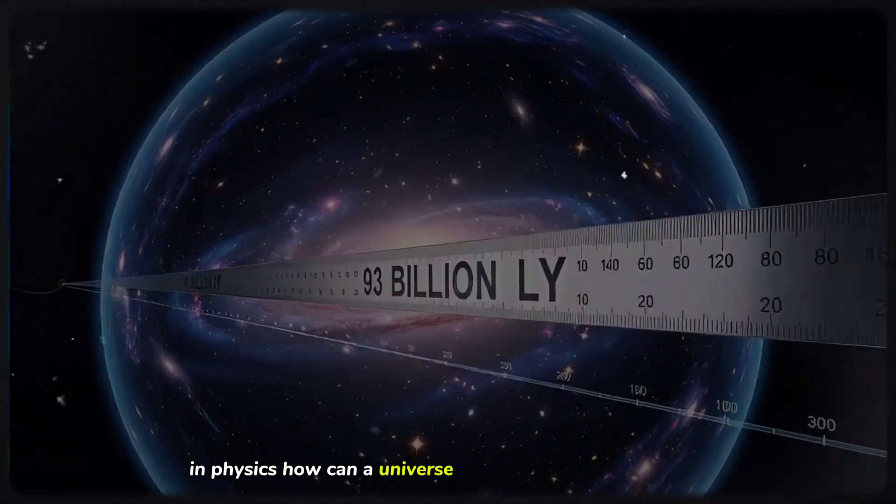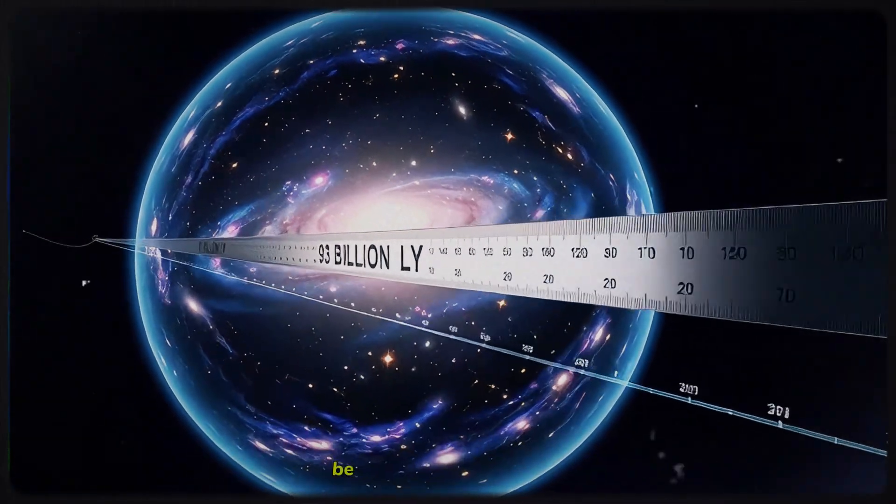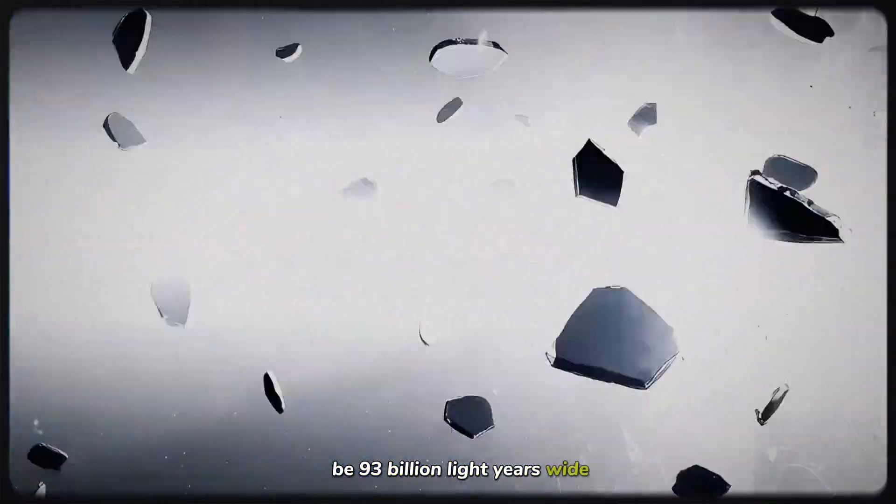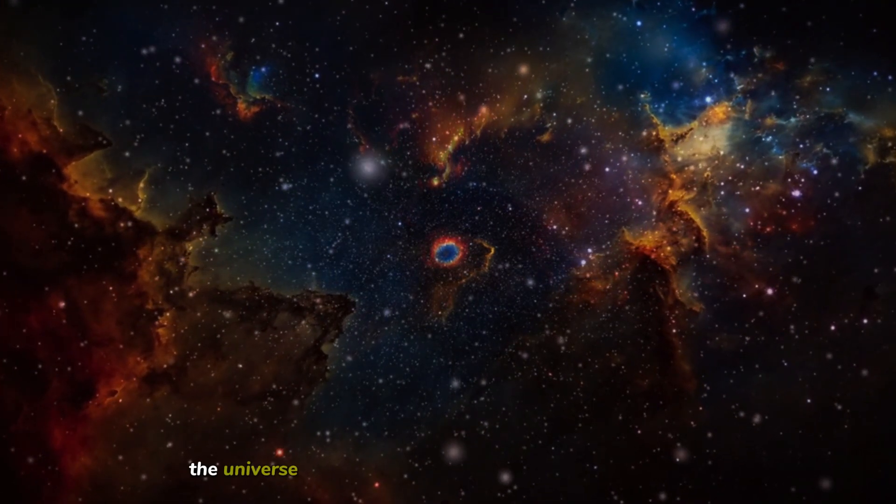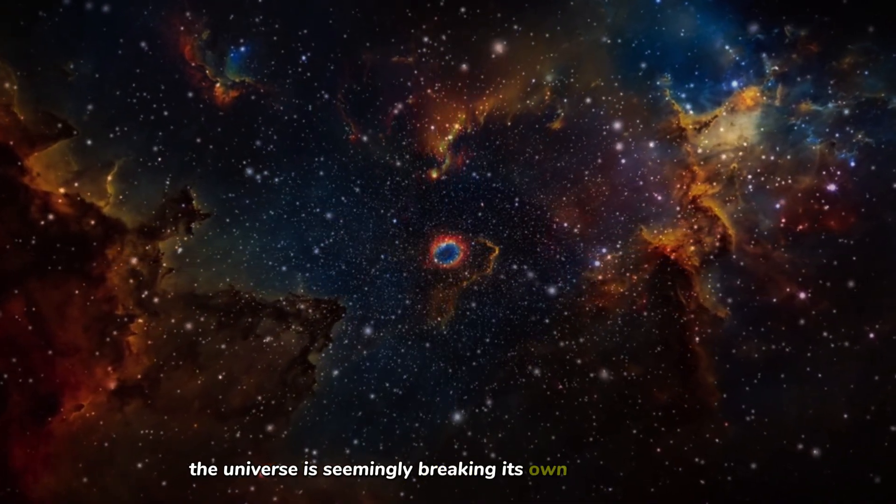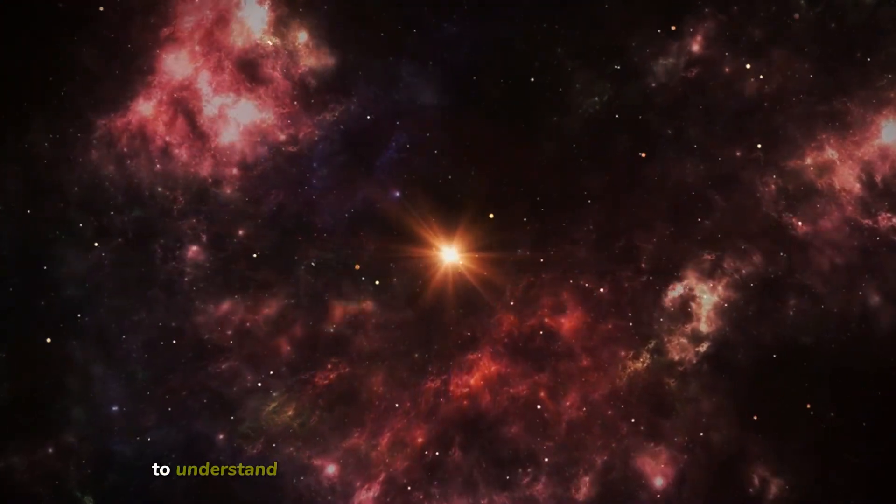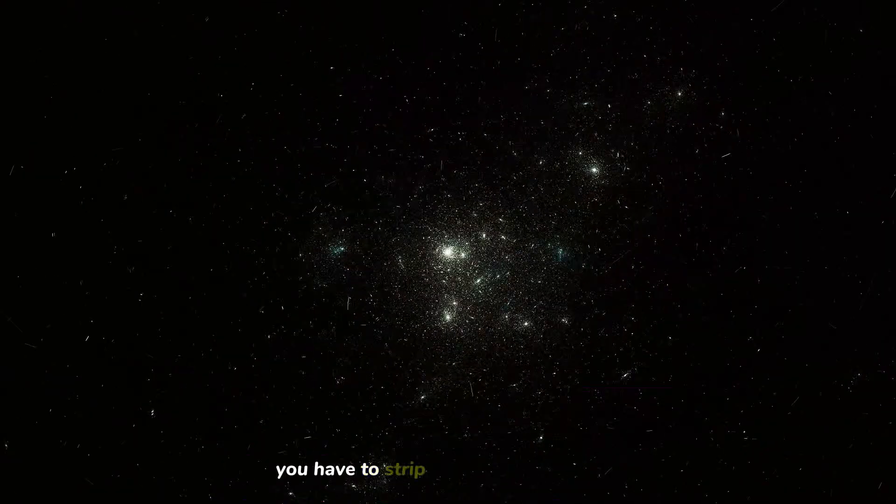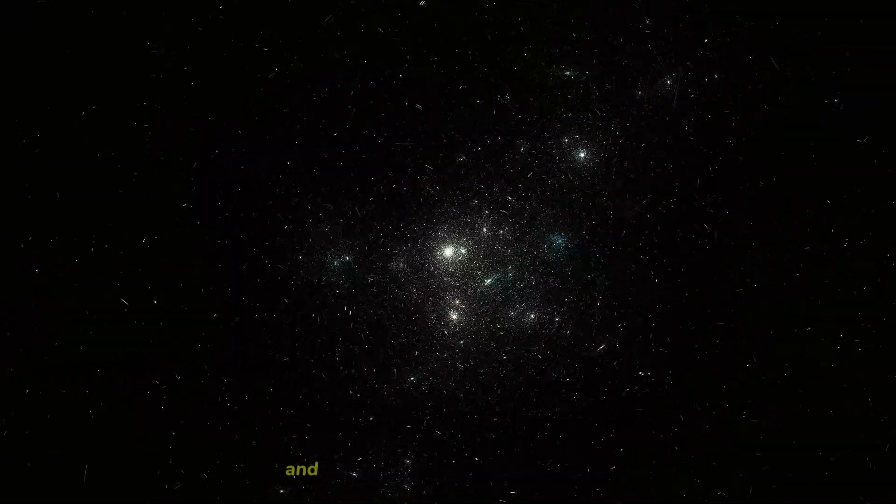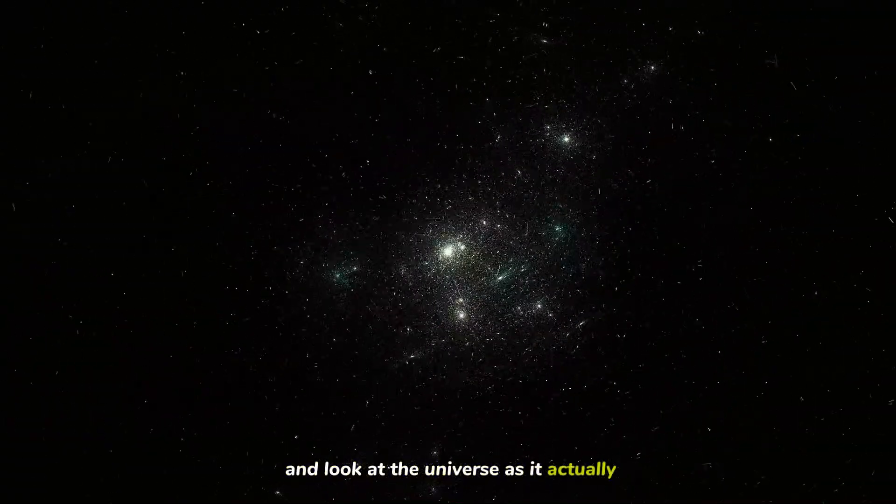How can a universe that is only 13 billion years old be 93 billion light years wide? If nothing can travel faster than light, that math shouldn't be possible. The universe is seemingly breaking its own fundamental laws. To understand how and to see what lies beyond that wall of darkness, we have to strip away human perception and look at the universe as it actually is.